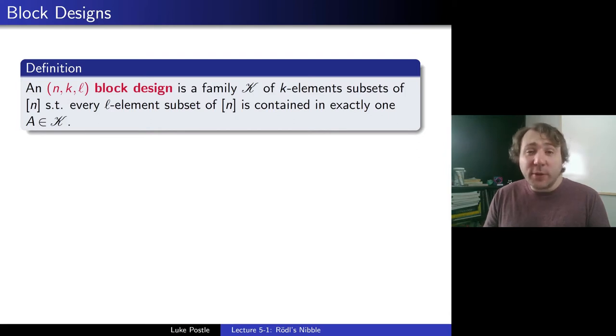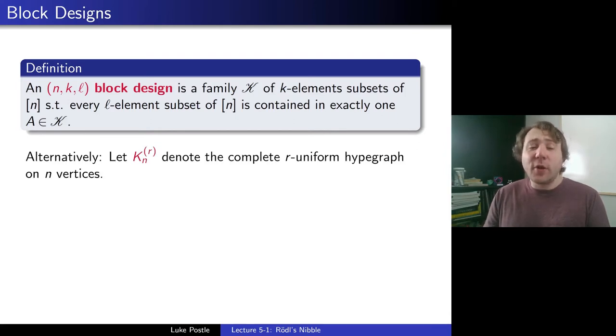Alternatively, we can let K_n^(r), so r with parentheses around it in the exponent, to denote the complete r-uniform hypergraph on n vertices. So that would be taking all, as a hypergraph, we take all the r-sets from a set of n vertices. And then given that language, there's an alternative formulation of a block design.